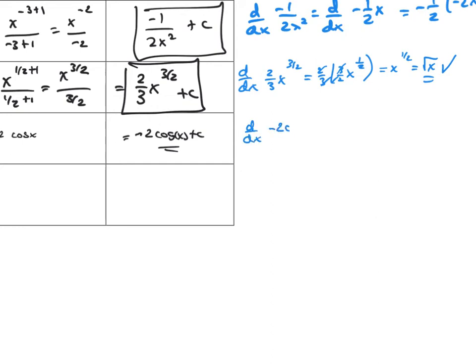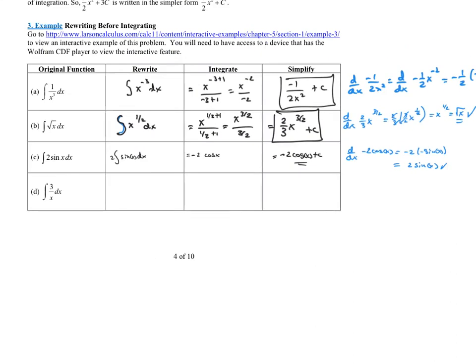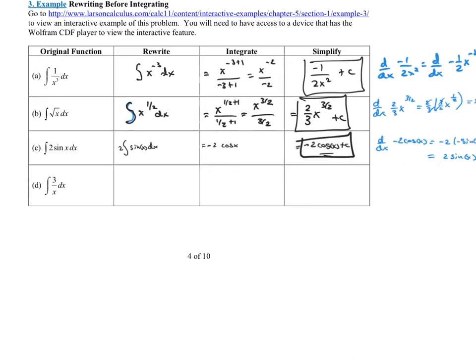To verify: the derivative of negative 2 cosine of x is negative 2 times the derivative of cosine of x. The derivative of cosine of x is negative sine of x, so this gives 2 sine of x — exactly the original problem. Also note: when checking answers, I never take the derivative of the plus C. The derivative of a constant is always zero, so it's a complete waste of time to include it.